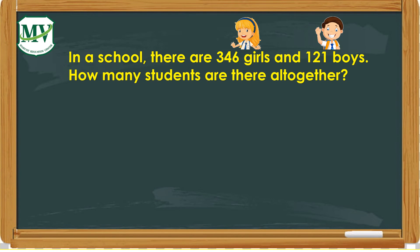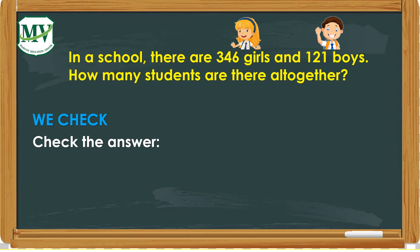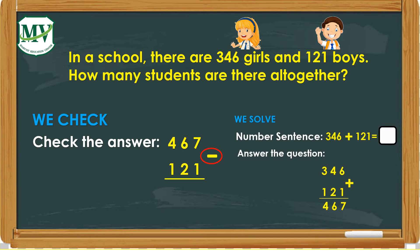The fourth step is we check. In this step, we will check if our final answer is correct. Our final answer is 467 minus 121. 121 is the number of boys. As you can see, we use subtraction to check our answer. This is done because in step 3 we used addition.